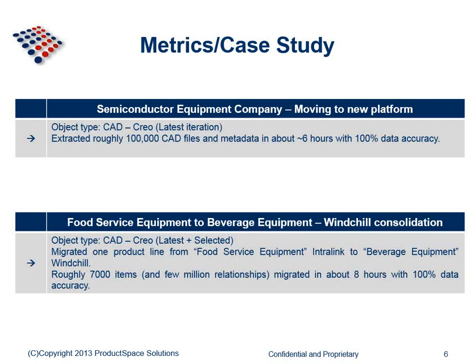Looking at a couple of use cases: we worked with a semiconductor company moving from the Windshield platform to TeamCenter, where we extracted the latest iteration of about 100,000 CAD objects in roughly six hours with 100% data accuracy. Another instance involved a food service company migrating a specific product — about 7,000 items plus one million relationships — from an Interlink system to a PDMLink system in about eight hours, including some selected object migrations.